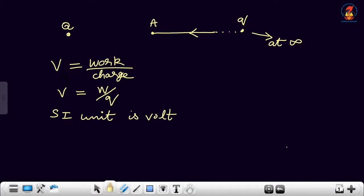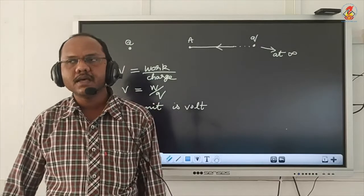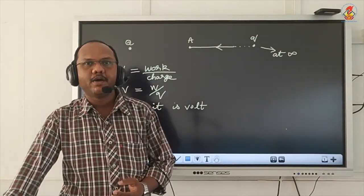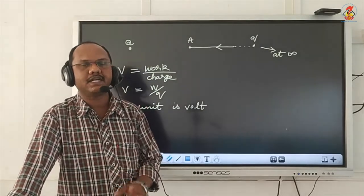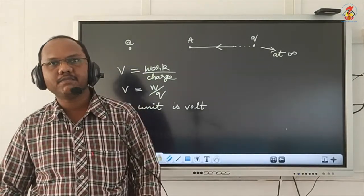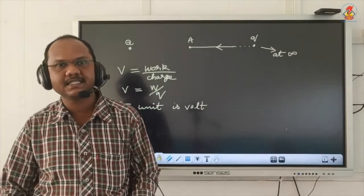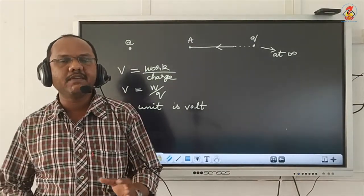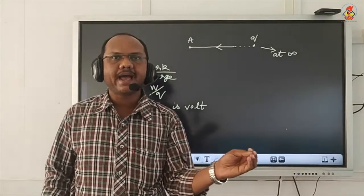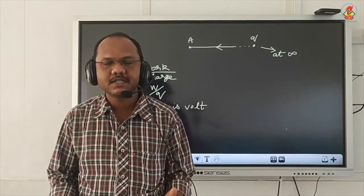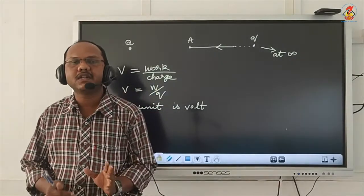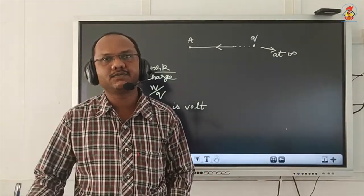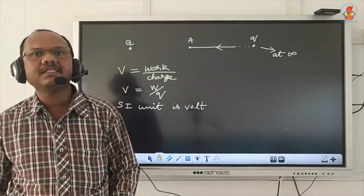The SI unit is volt and the potential is a scalar quantity. Even though potential is a scalar quantity, potential due to a positive charge is taken as positive and potential due to a negative charge is taken as negative. Since potential is a scalar quantity, if we find the total potential we only have to add or subtract the potentials — we don't have to consider vector algebra in this entire chapter.